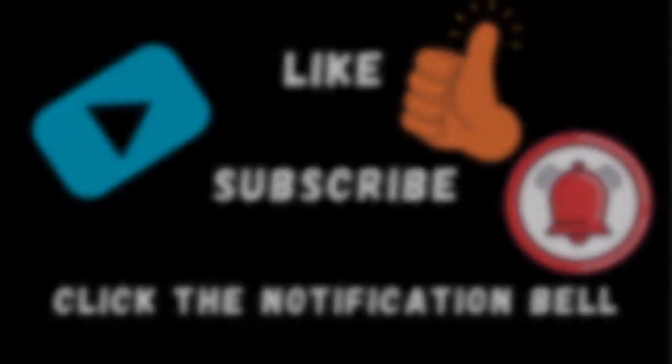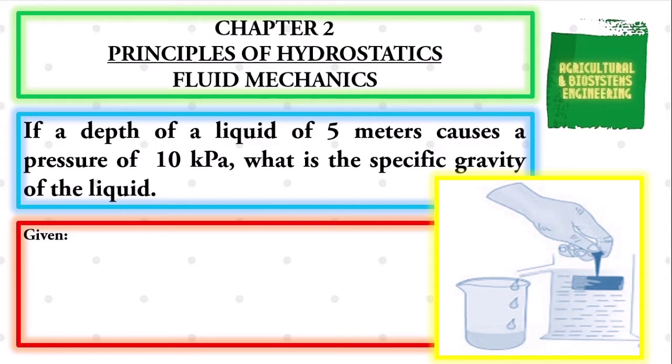To continue, we first identify our given. We have the height of the liquid, symbolized by letter h, to be 5 meters. The pressure, symbolized by letter p, to be 10 kilopascals. The required in the problem is the specific gravity, symbolized by letter s.